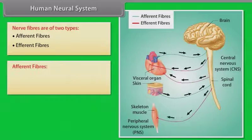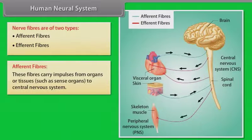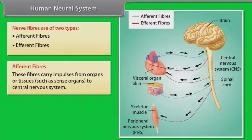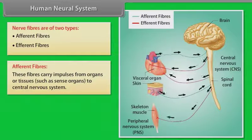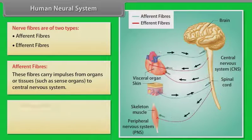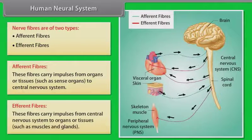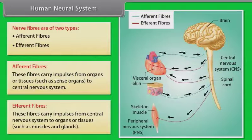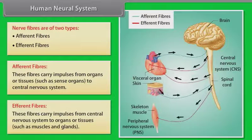Afferent fibers carry impulses from organs or tissues such as sense organs to the central nervous system. Efferent fibers carry impulses from the central nervous system to organs or tissues such as muscles and glands.